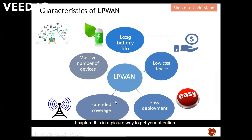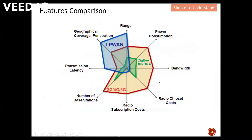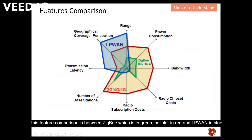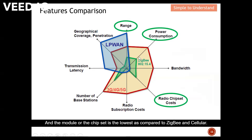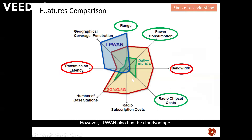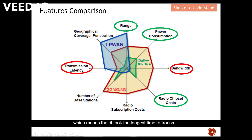This sums up the characteristics of LPWAN. Some feature comparison: this comparison is between Zigbee in green, cellular in red, and LPWAN in blue. LPWAN has the longest range compared to the other two, consumes the least power, and the module or chipset cost is the lowest. However, LPWAN also has disadvantages: it has the least bandwidth, meaning it can carry the least data, and it has the largest latency, meaning it takes the longest time to transmit.